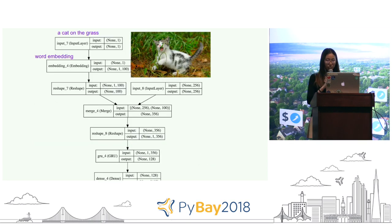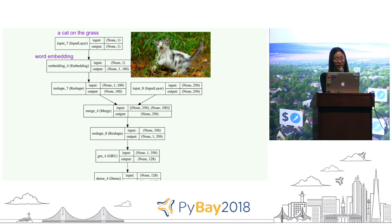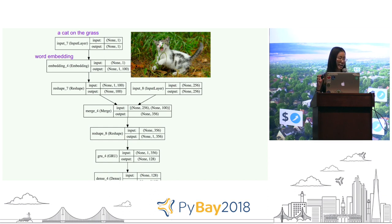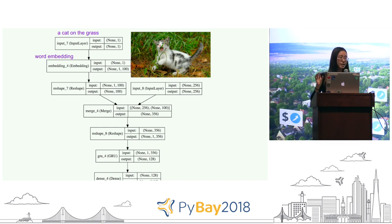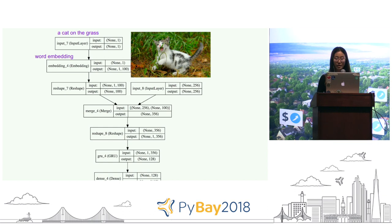Basically, this is what the model looks like. On the left-hand side, we feed in the sentence — for example, 'a cat on the grass' — then we do word embedding, feed in the image, concatenate them together, and feed in lots of image and sentence pairs. Hopefully the model will learn that given a new image, it will output a sentence to describe it.